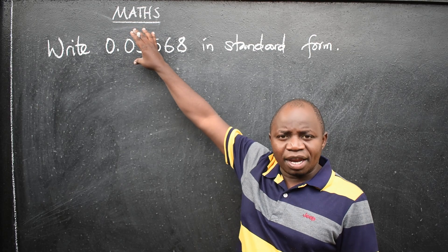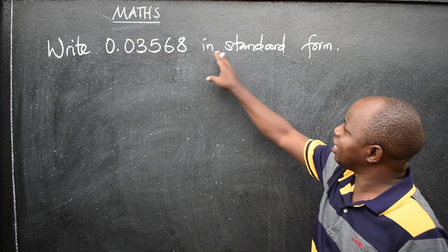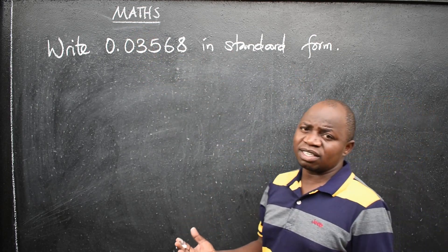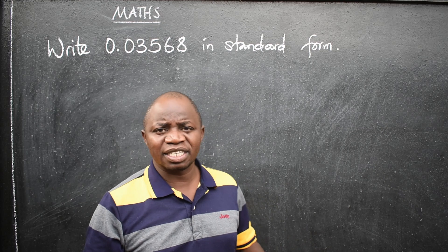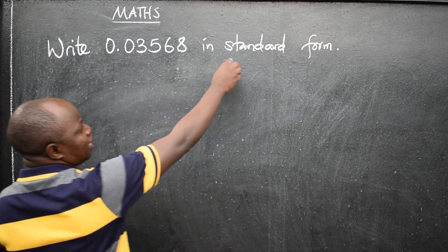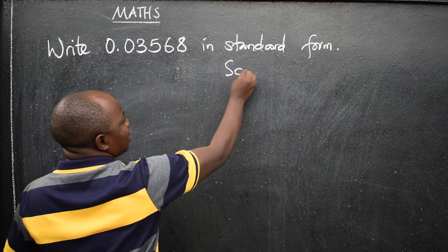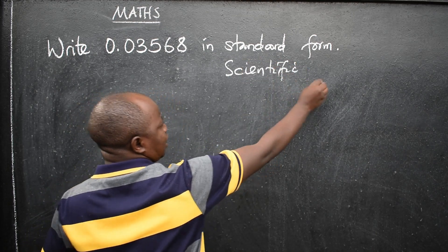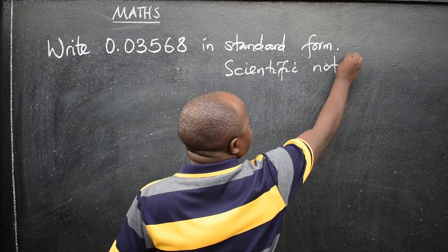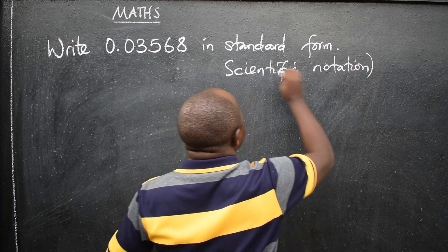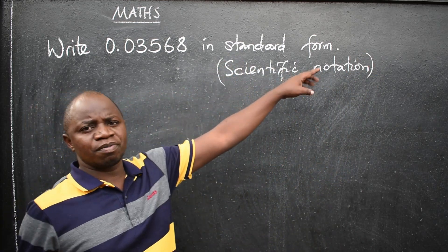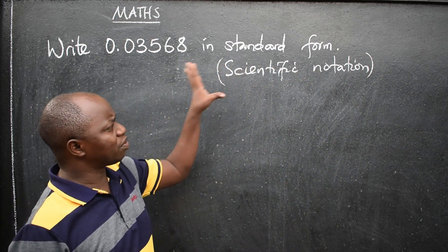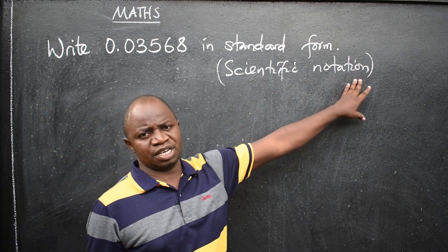When they give you a number and they've asked you to write it in standard form, that is the same as saying you write it in scientific notation. So when you say standard form, that is the same as saying scientific notation. So don't get confused. When you say standard form, that is the same as saying you write a given number in scientific notation.